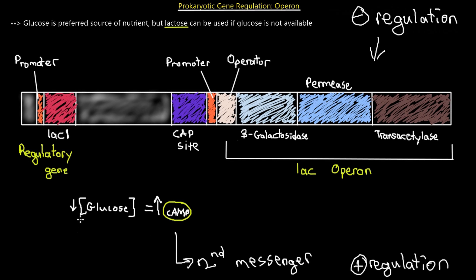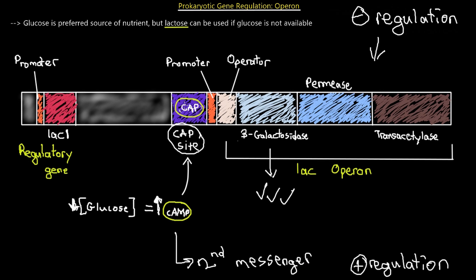When the concentration of glucose is low, we get a rise in cyclic AMP. The increase in cyclic AMP produces something called the CAP molecule, which then binds to the cap site. From this binding of the CAP molecule to the cap site, we have positive regulation of the lac operon — meaning we're going to produce more permease, beta-galactosidase, and transacetylase. The CAP binding to the cap site acts as an activator.